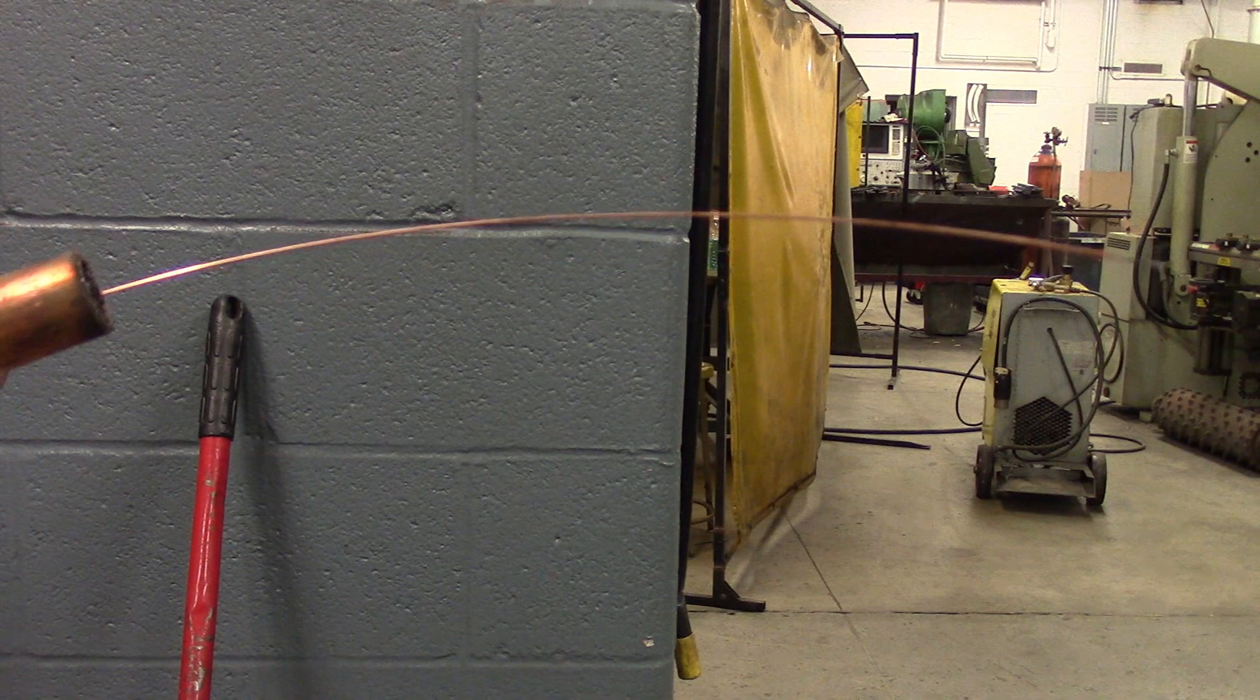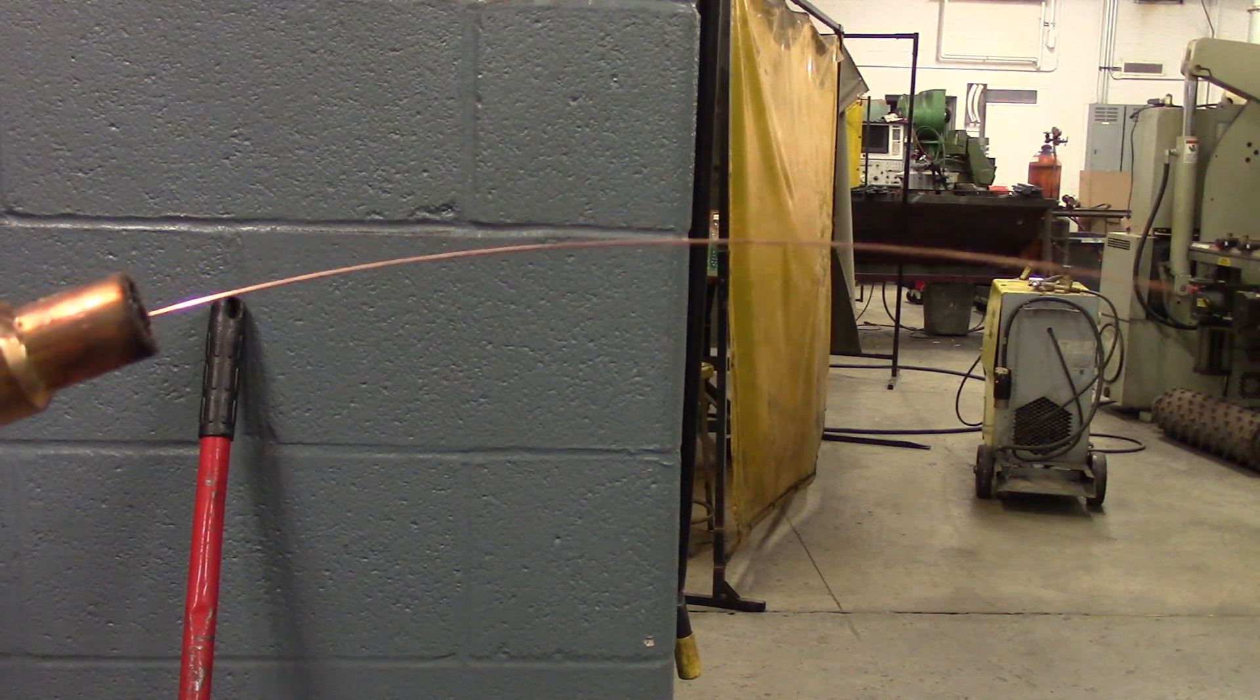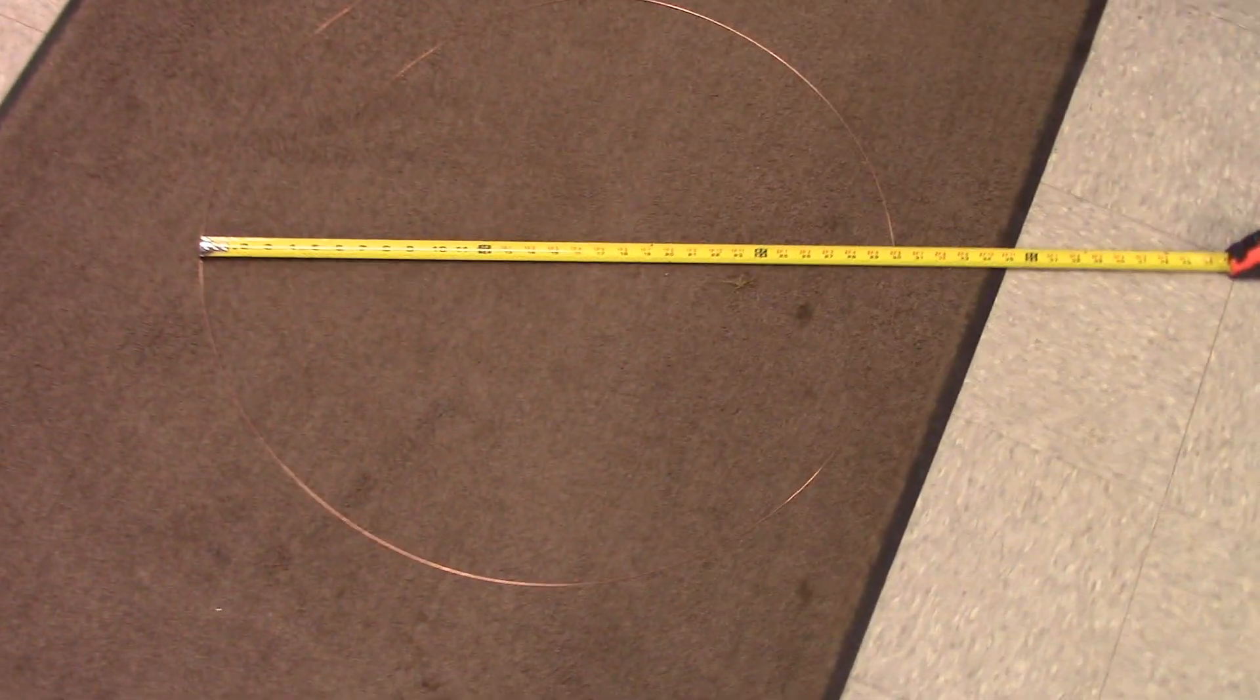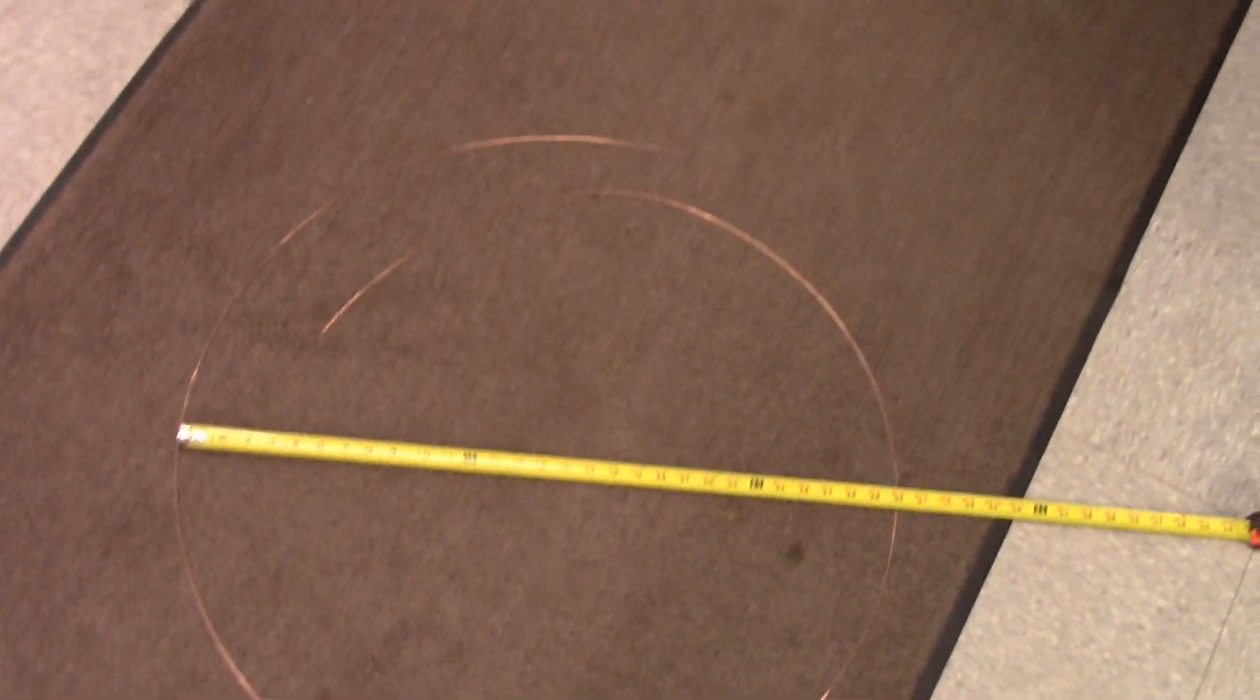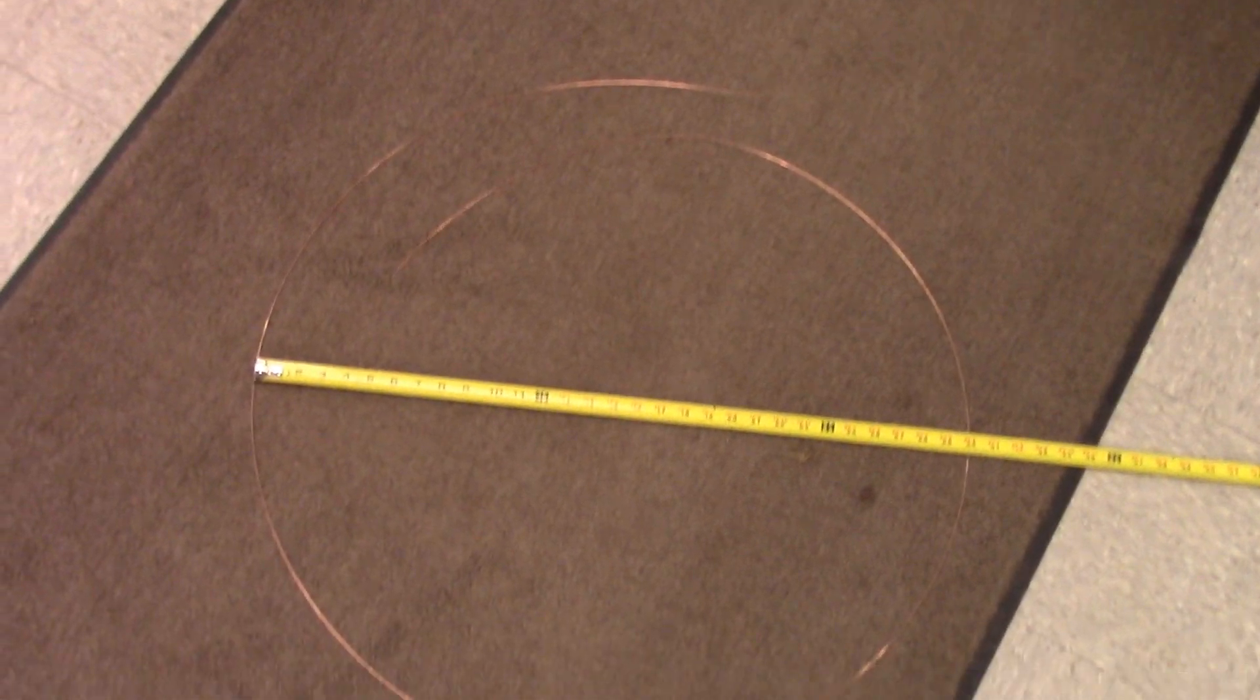Now I'm going to pull the trigger until it does a complete loop, and I'll show you how to measure it. Alright, here we go. There's the MIG wire. You can see it's got a full revolution here.